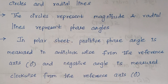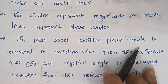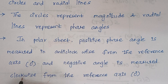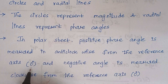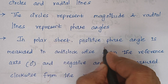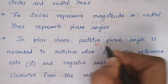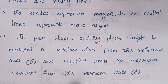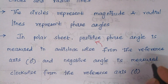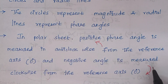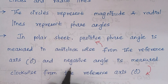In a polar sheet, positive angles are measured anti-clockwise from the reference axis. The reference axis is always 0 degrees. So from the reference axis, positive phase angles are measured in the anti-clockwise direction, and negative angles are measured clockwise from the reference axis.